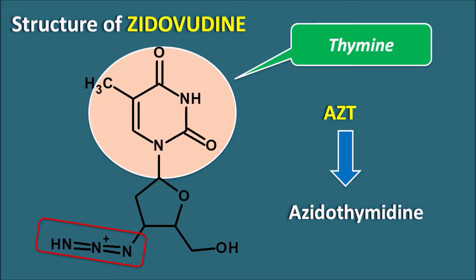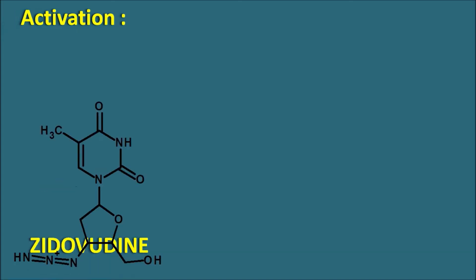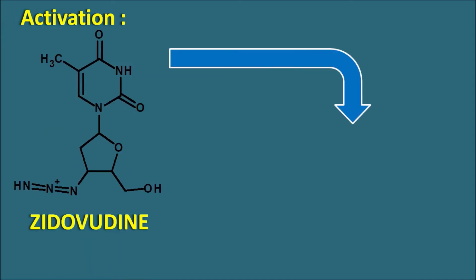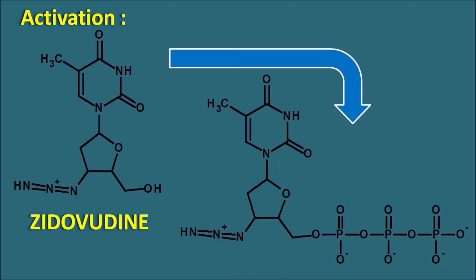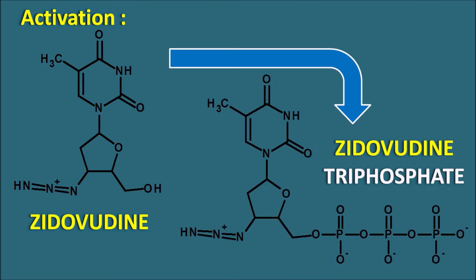Zidovudine is an analog of thymidine, so it can compete with nucleosides within the host cells and inhibit the reverse transcriptase enzyme activity — classifying it as an NRTI. In order to show its action, this drug must first be activated into the triphosphate form through phosphorylation to form Zidovudine triphosphate, which is the active form that inhibits reverse transcriptase.